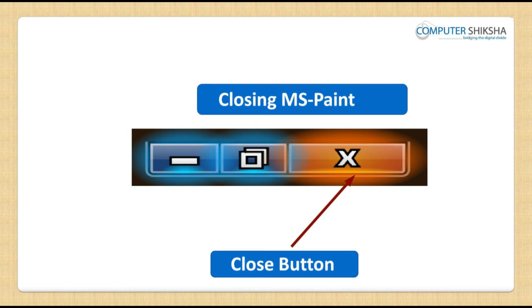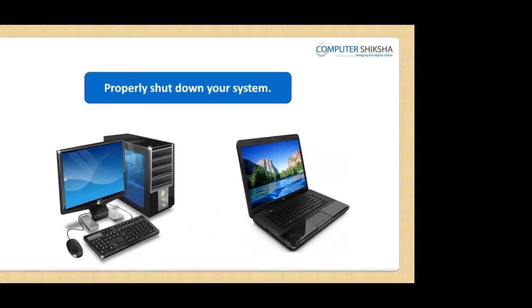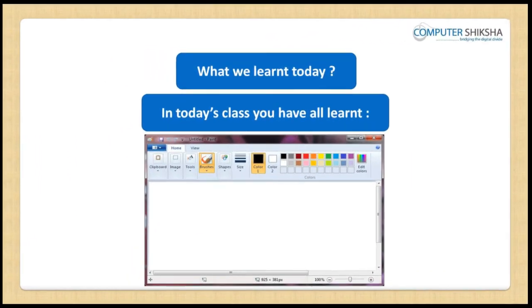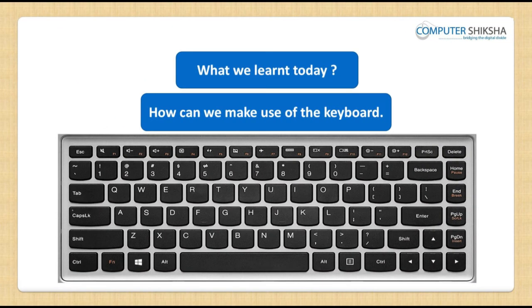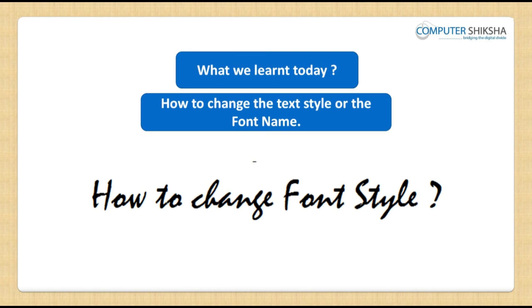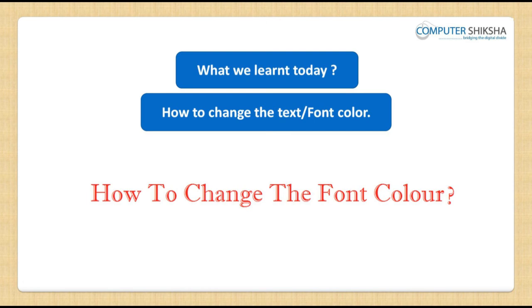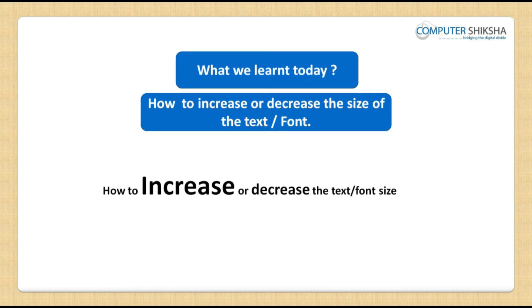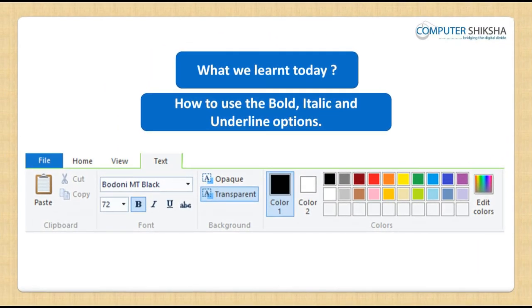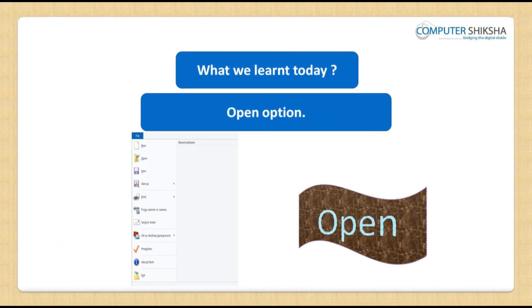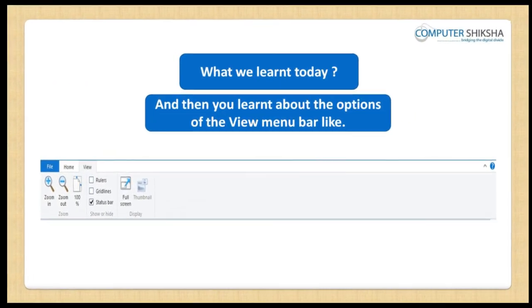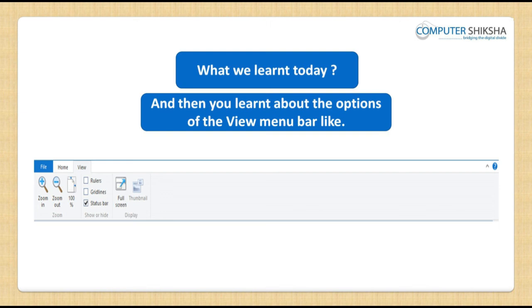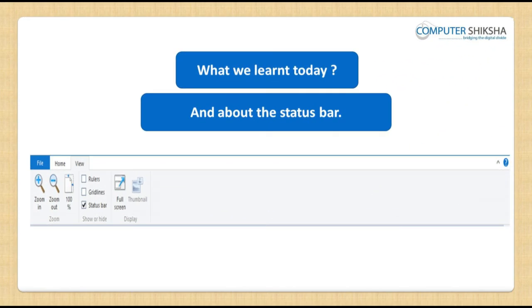Since we will be ending today's class here, you should all close your paint file and properly shut down your computer. In today's class, you have all learned how we can type in an MS Paint file, how to use the keyboard, how to change the text style or font name, how to change the text or font color, how to increase or decrease the size of the text or font, how to use the bold, italic and underline options. You also learned about using new, open, save, save as and set as desktop background options, and about the view menu bar options like zoom in, zoom out, ruler and the status bar.